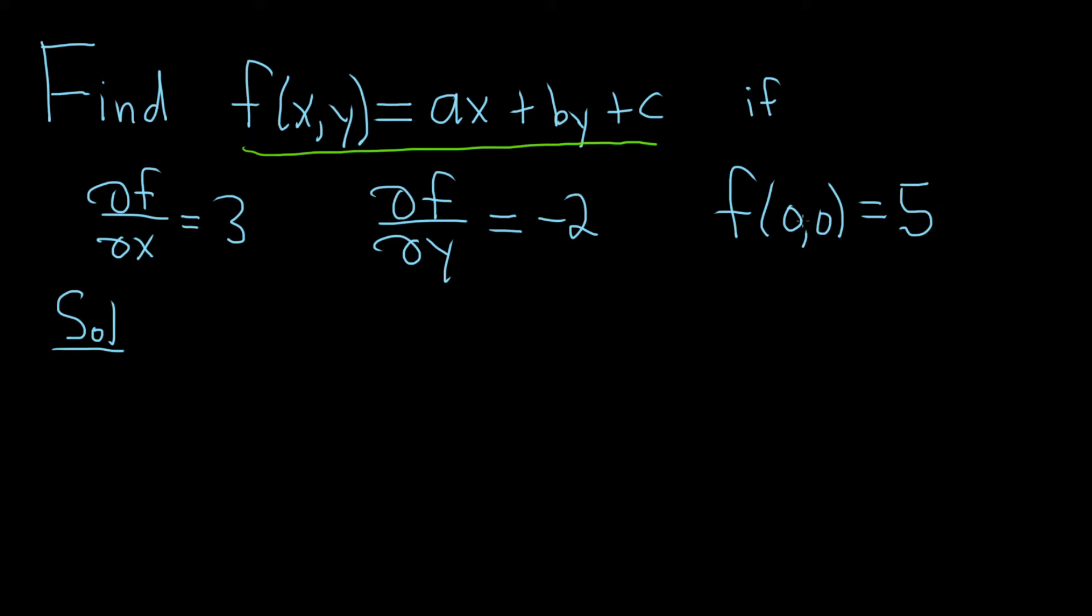So let's take 0, 0 and plug it into this function. We have f(0, 0), and that would be equal to a times 0 plus b times 0 plus c, right, because the x and the y are both 0s, and then it's equal to 5, so we set it equal to 5.